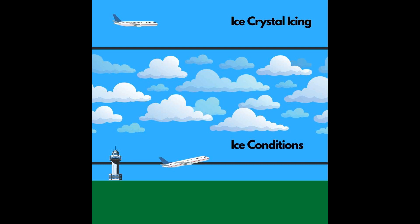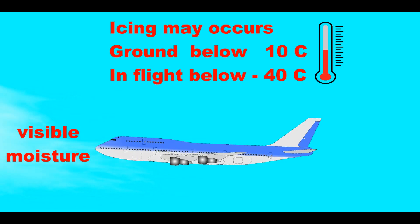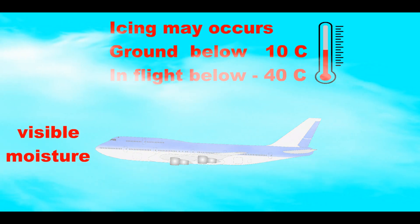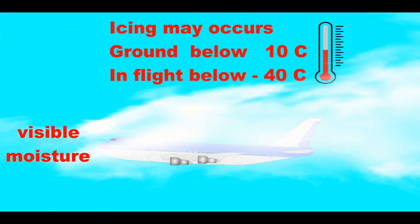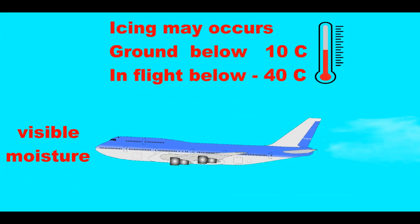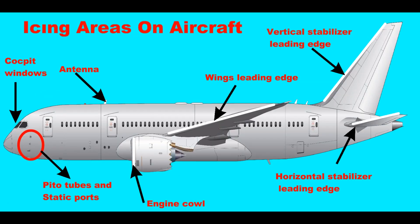The formation of icing depends on certain atmospheric conditions. For example, icing can occur at temperatures below 10 degrees Celsius with apparent humidity on the ground, and in humid environments below minus 40 degrees Celsius at high altitude. Icing in the air primarily occurs on the wings, horizontal and vertical stabilizer leading edges, engine air intakes, propellers, pitot tubes, static ports, and antennas.